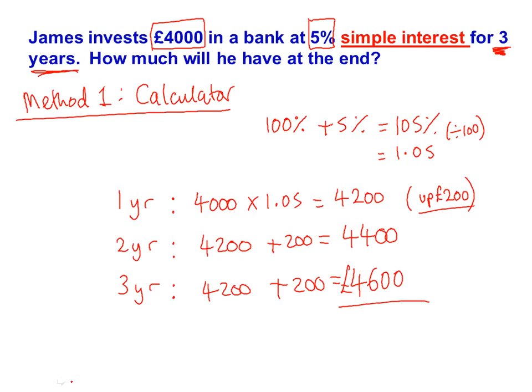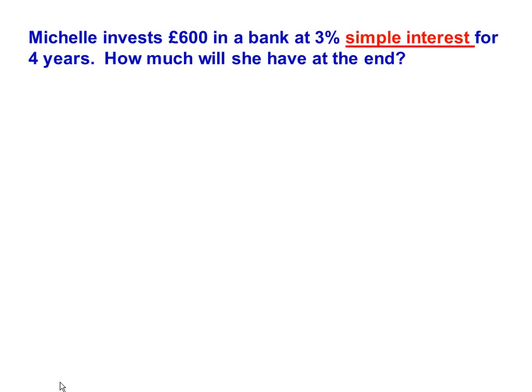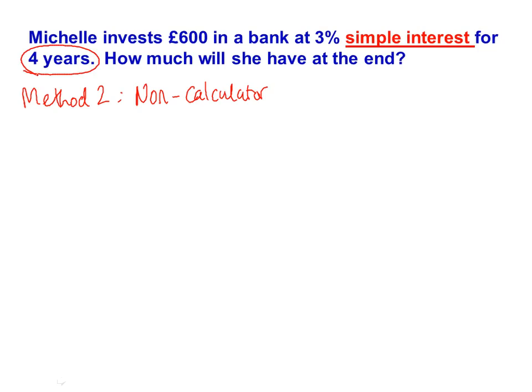Let's have a look at another question, this time without a calculator. Michelle invests £600 in a bank at 3% simple interest for 4 years. How much will she have at the end? This is method number two — non-calculator — so this method could be used in both papers. It's a four-year question, so let's set it up: one year, two year, three year, and four year.